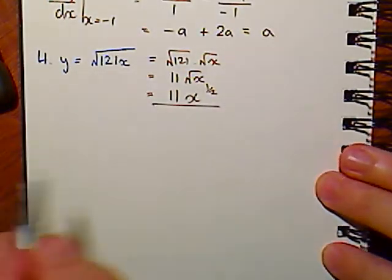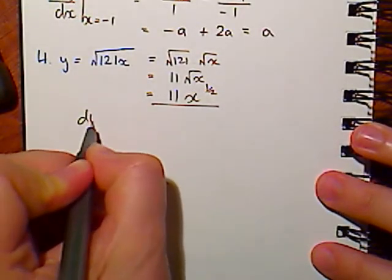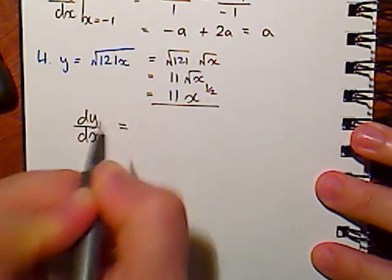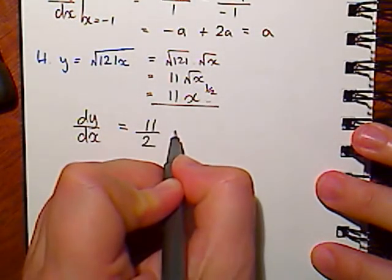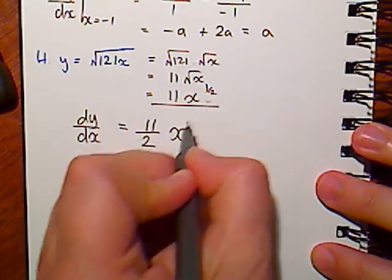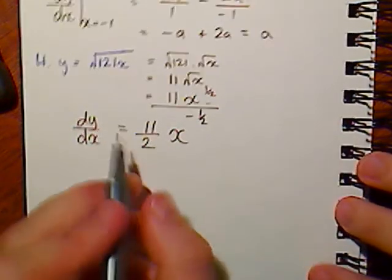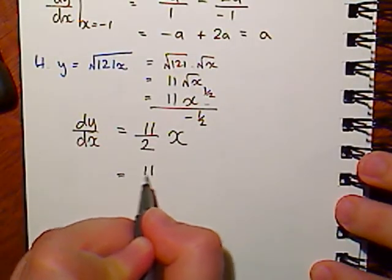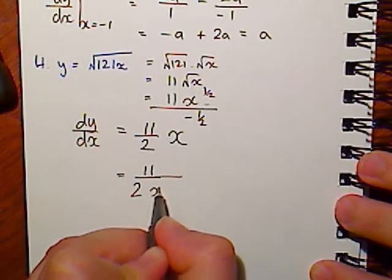This form is the one that's easiest to use if I want to use my power rule. So now I can say that dy dx, half out the front here will give me 11 over 2, x, one off the power is minus a half. I'm going to rewrite that without my negative indice, 11 over 2x to the half.